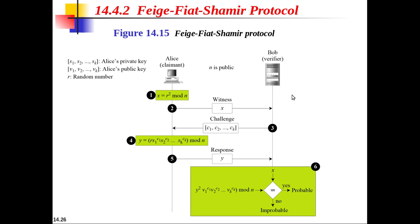Next is the Feige-Fiat-Shamir protocol. This is similar to the first protocol except that it uses a vector of private keys s1, s2, …, sk, a vector of public keys v1, v2, v3, …, vk, and a vector of challenges c1, c2, c3, …, ck. The private keys are chosen randomly but must be relatively prime to n. The remaining steps are the same as the previous protocol, and verification is repeated several times with c equal to 0 or 1. The claimant must pass each test to be verified.